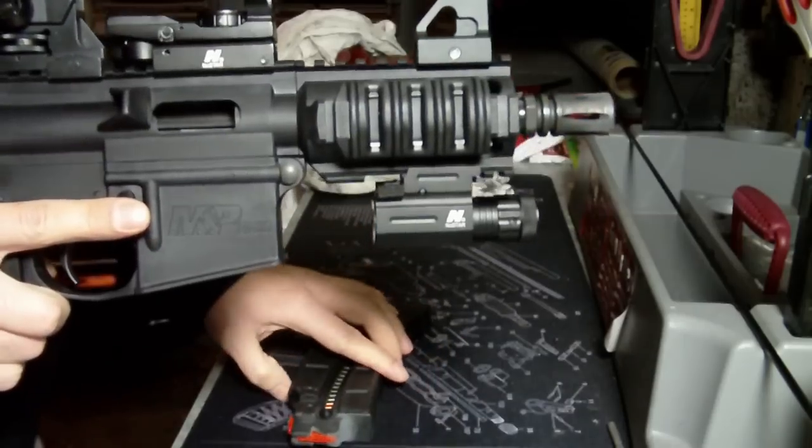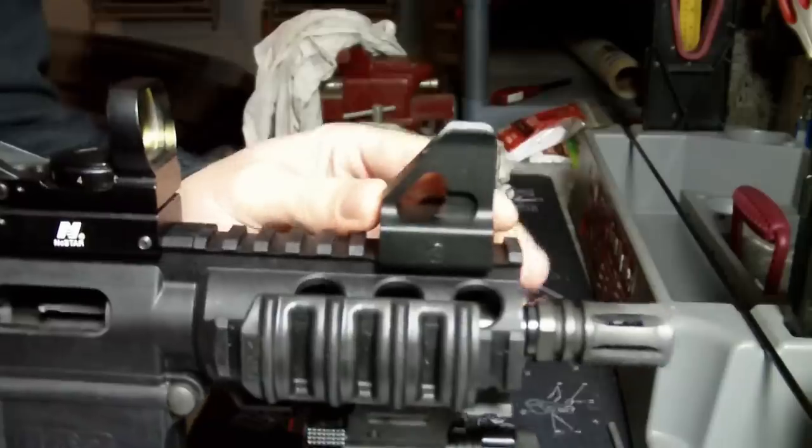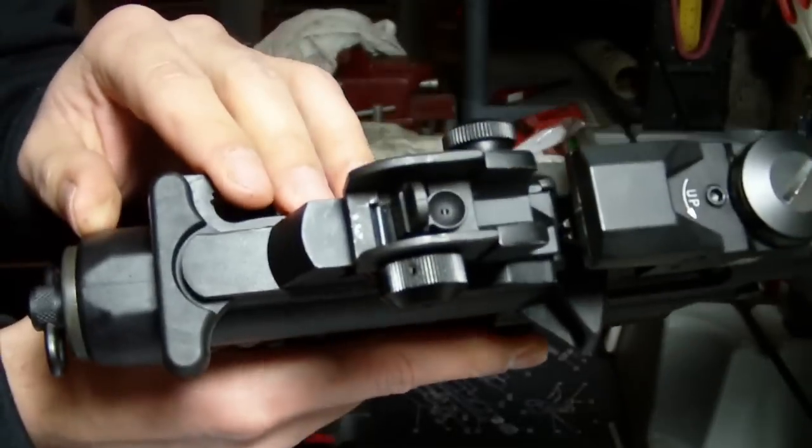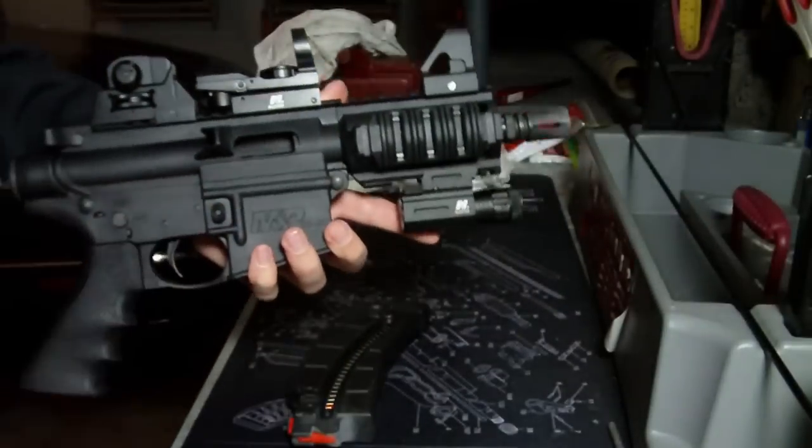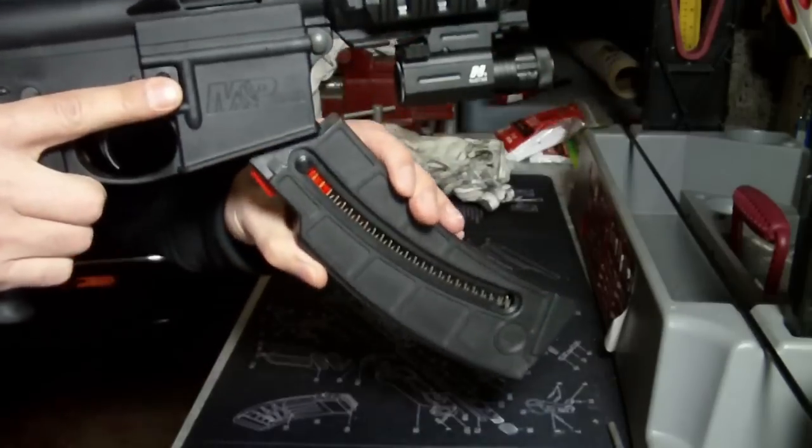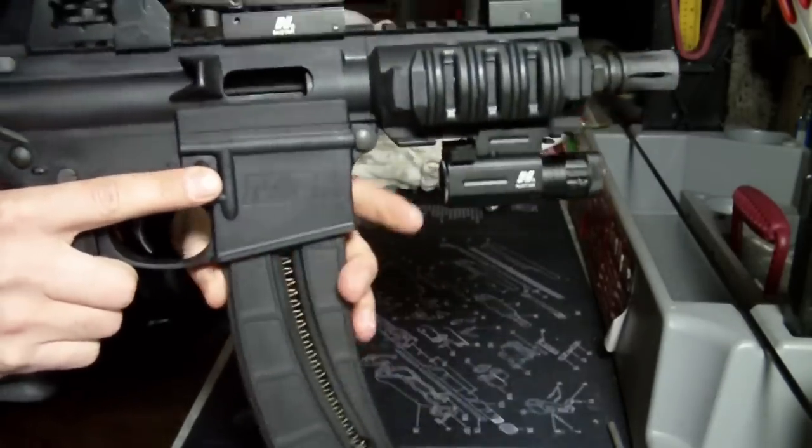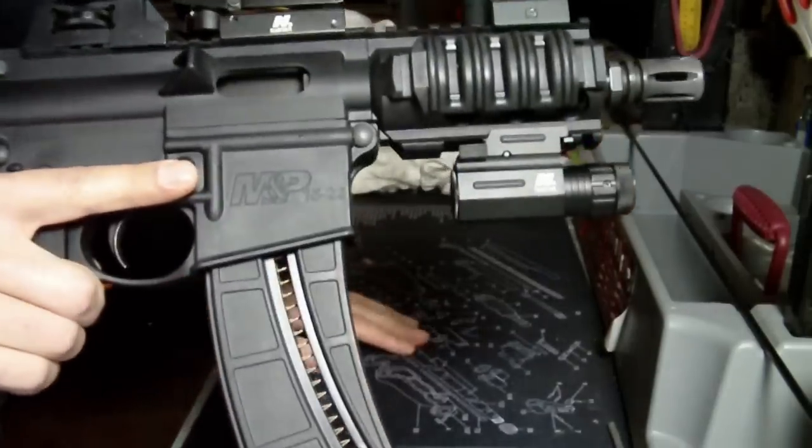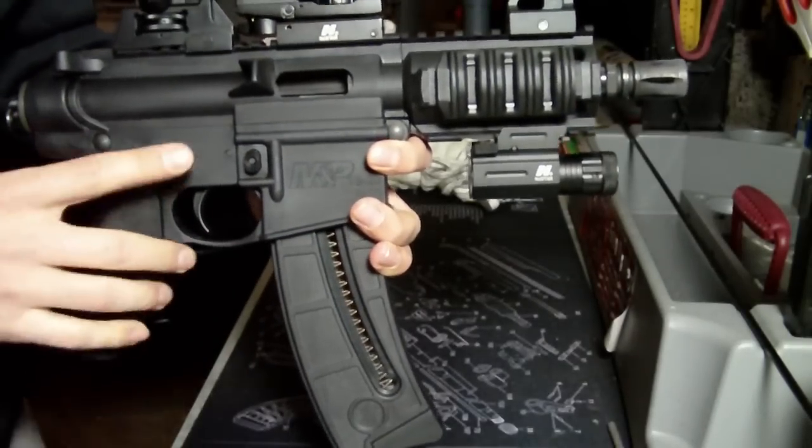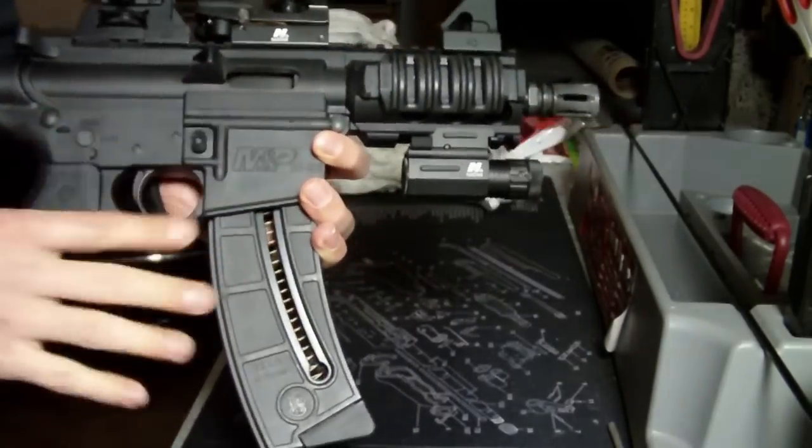It's got a 1 in 15 inch twist. The front and rear sights are adjustable, right there and right there, as well as removable from the rail itself. It's about 51 ounces, so it's a pretty hefty little gun being mostly composite. It's got a carbon steel barrel and black finish.